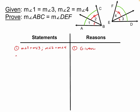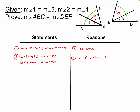For step two, I'm looking for the whole green angle. So I'll write: measure of angle 1 plus measure of angle 2 equals measure of angle ABC, and measure of angle 3 plus measure of angle 4 equals measure of angle DEF. The two parts equal the whole. We have a postulate called the angle addition postulate that lets us say that — it tells us the sum of the smaller angles makes up the larger angle.